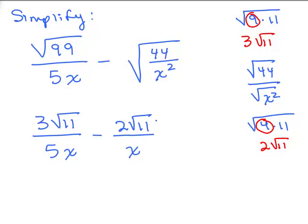Okay, now can you subtract the way it is right now? In order to subtract with fractions you have to have a common denominator and I've got 5x in one denominator and only x in the other. So I need to multiply the second fraction by 5 over 5 to get a common denominator.